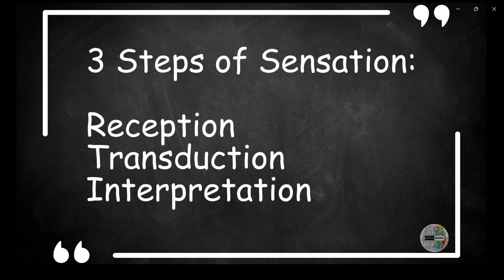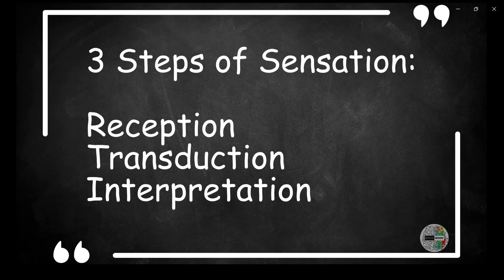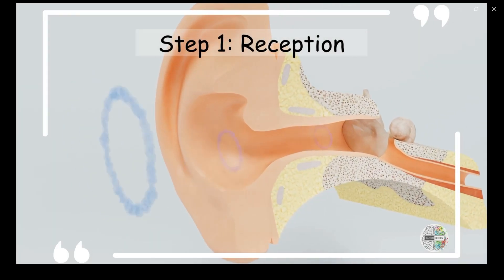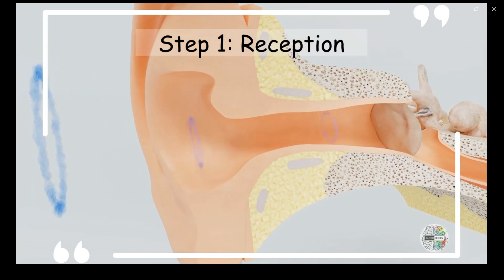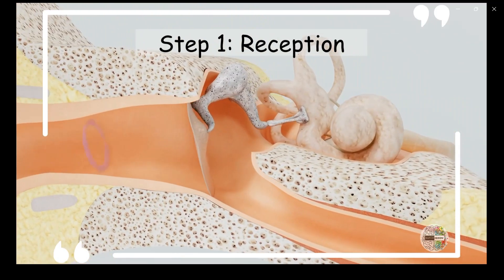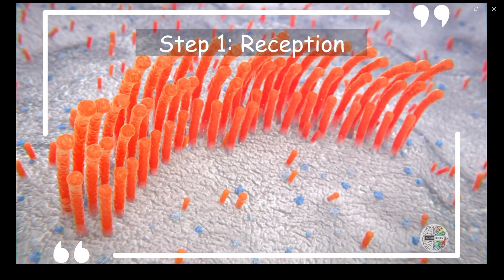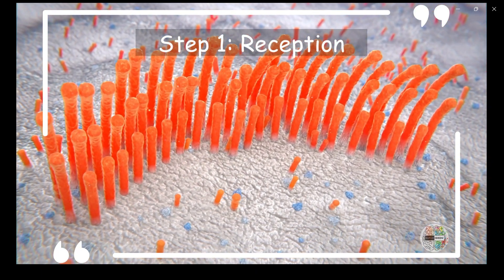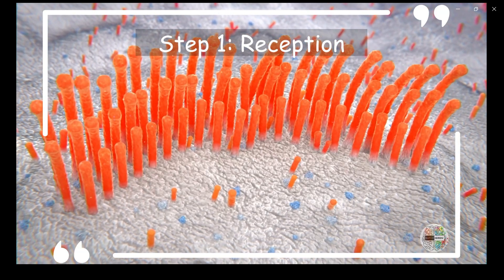The process of sensation involves three key steps: Reception, transduction and interpretation. Let's break down each step with an example using the sense of hearing. Step 1, Reception. Reception is the first step in sensation and involves detecting a stimulus using specialized sensory receptors. In the case of hearing, the stimulus is sound waves in the environment. Your ears contain sensory receptors called hair cells in the inner ear. These hair cells are sensitive to vibrations caused by sound waves. Example: Imagine you are sitting in a quiet room and suddenly someone plays a musical note on a piano nearby. The sound waves produced by the piano are the stimuli. Your ears receive these sound waves and the hair cells in your inner ear detect the vibrations caused by the sound.